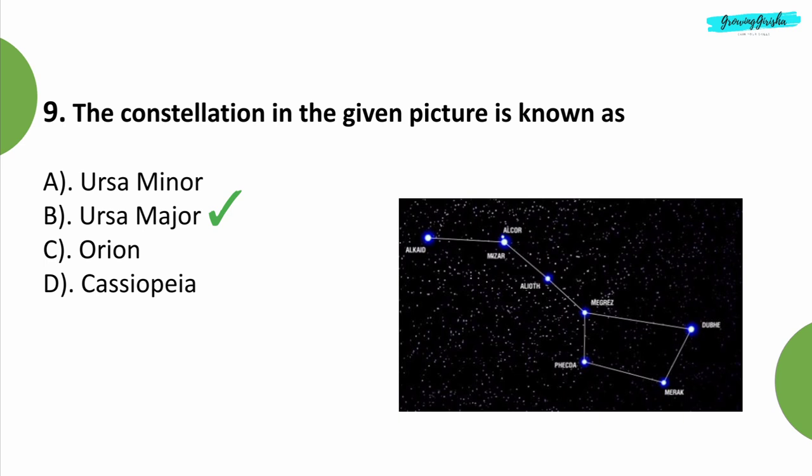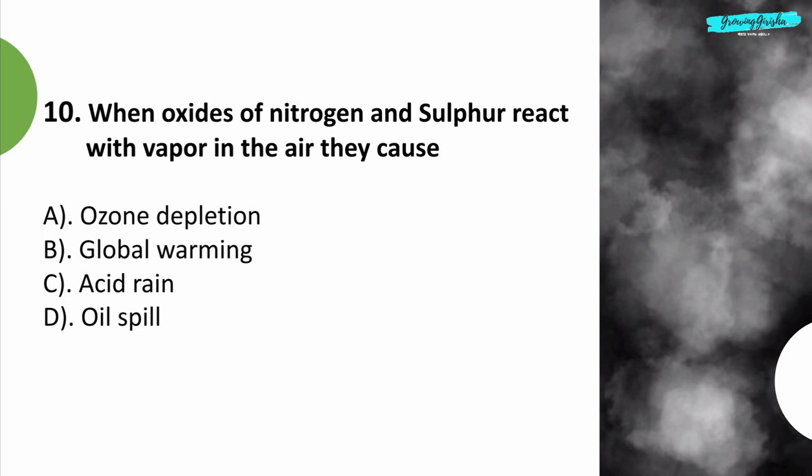Question 10: When oxides of nitrogen and sulfur react with vapor in the air, they cause? Option: Acid rain.